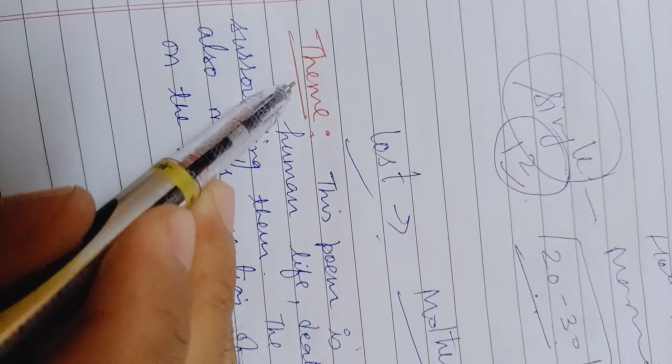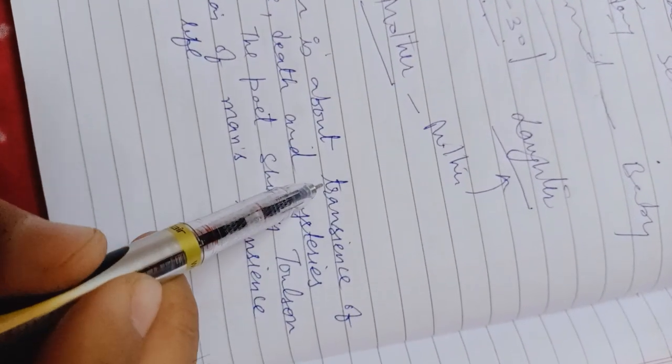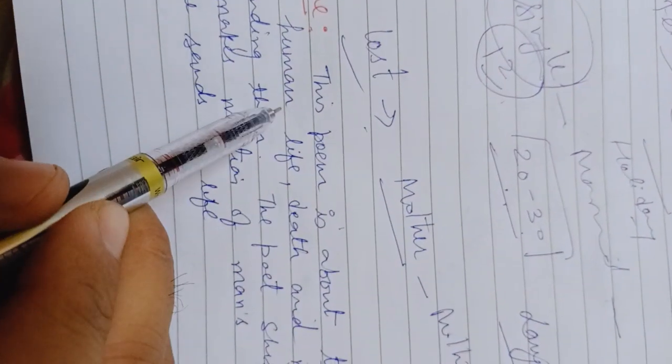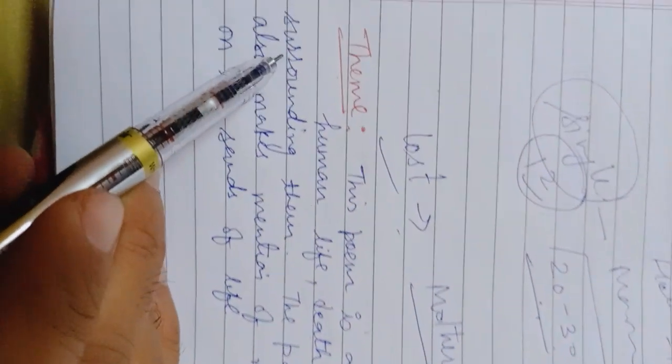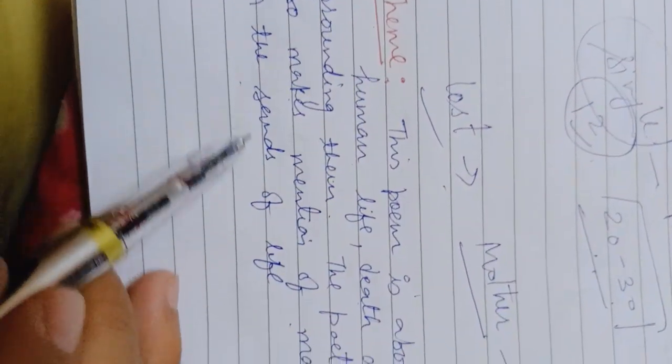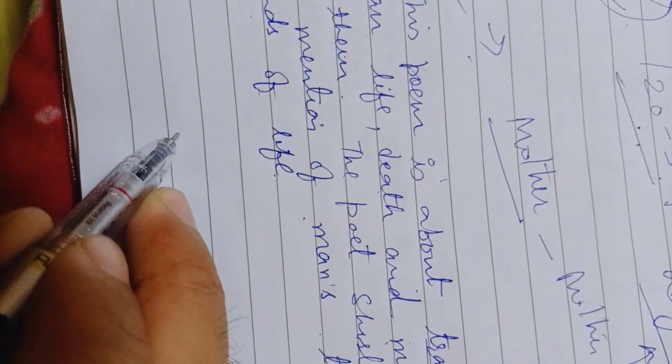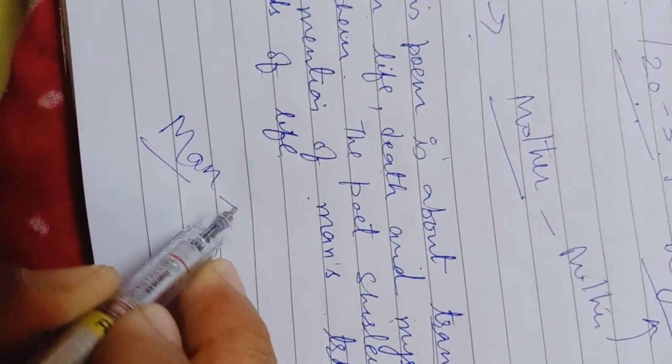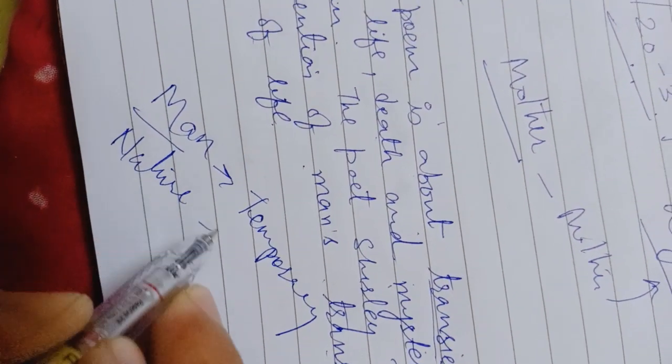And apart from that, two more questions I'll tell you. One important one: What is the theme of this chapter, or the poem actually? This poem is about transience of human life - meaning temporary death and mysteries surrounding them. The poet Shirley Toulson also makes mention of man's transience on the sand of life. What is the thematic approach of this poem? It means we people, like men, are temporary and nature is permanent. This is the basic theme of this particular poem.